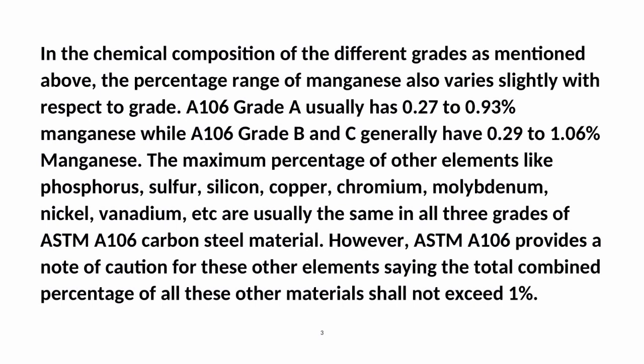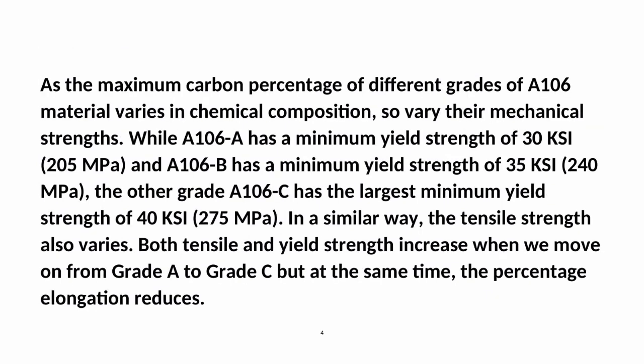However, ASTM A-106 provides a note of caution that the total combined percentage of all these other elements shall not exceed 1%. As the maximum carbon percentage varies between grades, so do their mechanical strengths. A-106 Grade A has a minimum yield strength of 30 KSI (205 MPa), Grade B has 35 KSI (240 MPa), and Grade C has the largest minimum yield strength of 40 KSI (275 MPa). Both tensile and yield strength increase from Grade A to Grade C, but the percentage elongation reduces.